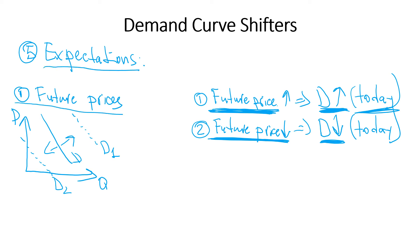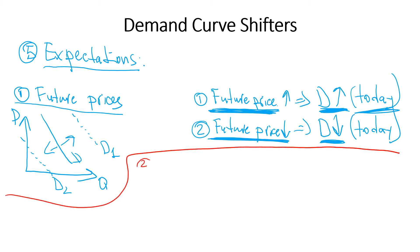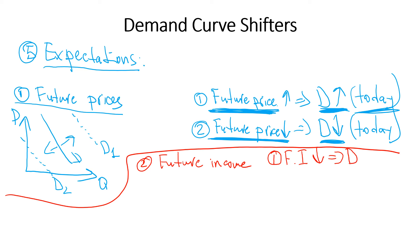The second part of expectations is about future income. Suppose you know your future income is going to decrease — the economy is going into recession and a month from now your company is closing and you'll lose your job. What are you going to do today? You're going to buy less, so demand for goods and services decreases today.